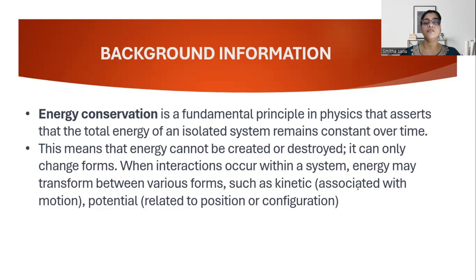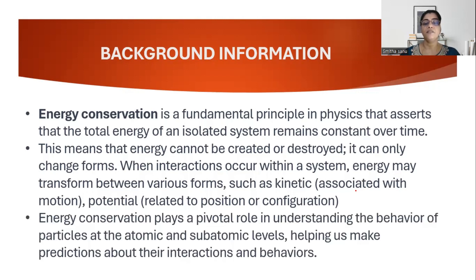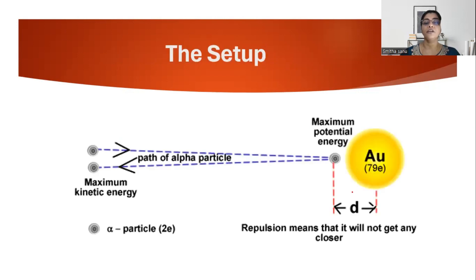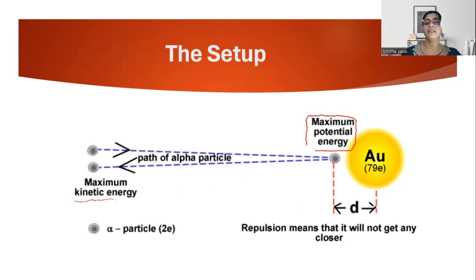Energy can only be transformed from one form to another — here, between kinetic and potential energy. When an alpha particle is moving, it has maximum kinetic energy. As it comes closer to the nucleus, it becomes slower and slower, reaching a point where it stops moving — that is when it has the highest potential energy. The entire kinetic energy of the moving alpha particle is converted to maximum potential energy at the point of closest approach.